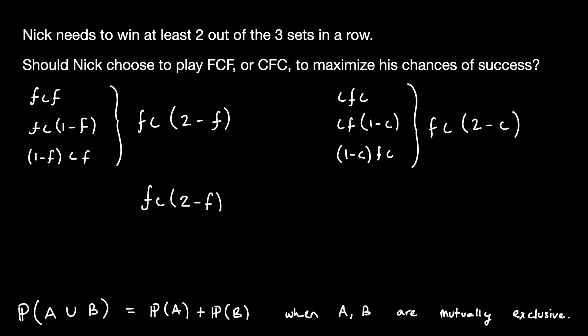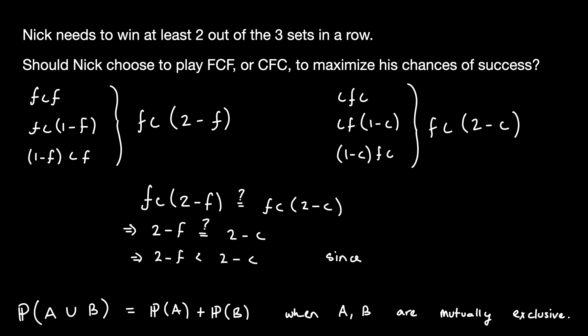Now that we have the overall probabilities, let's work to compare them to each other. We can simplify by canceling out the F times C, leaving us with 2 minus F and 2 minus C. Remembering our assumption that probability F is greater than probability C, we find that 2 minus F is strictly less than 2 minus C. Therefore, Nick has a higher chance of winning in the champion-friend-champion situation. This may seem a little counterintuitive at first — how can the probability of winning be higher in the situation where we're playing the champion more often? The key insight is that in all of our win situations, Nick needs to win the second set. Therefore, the second set is the most crucial of the three sets, and it makes sense to put the weaker player in the second set.